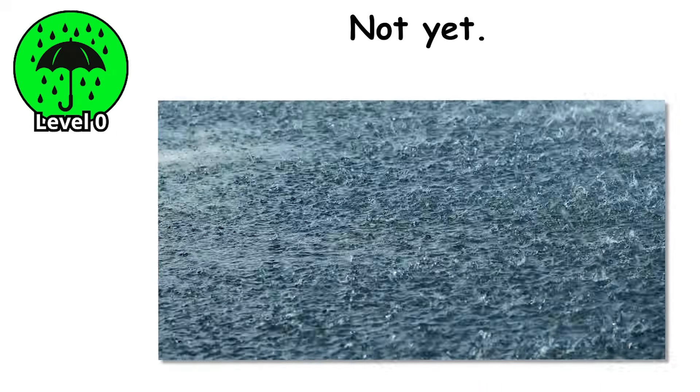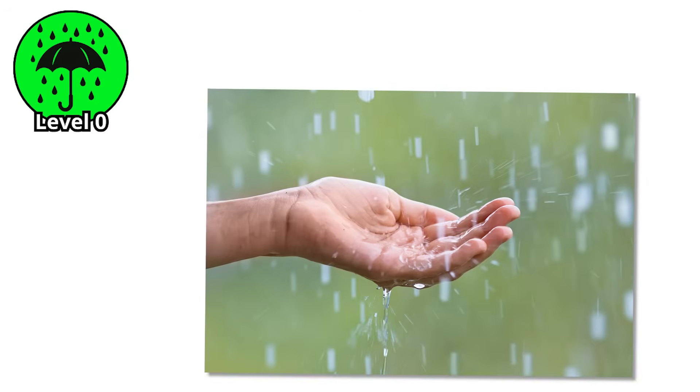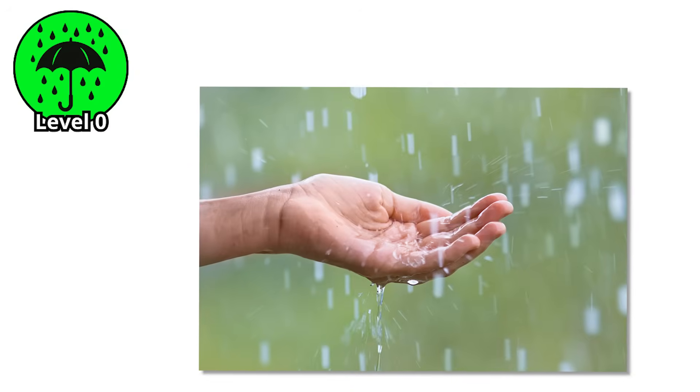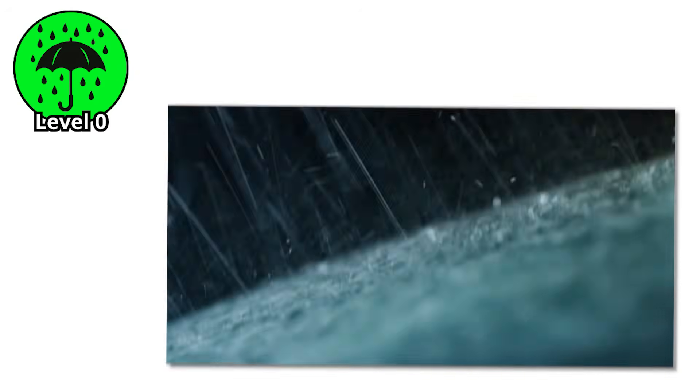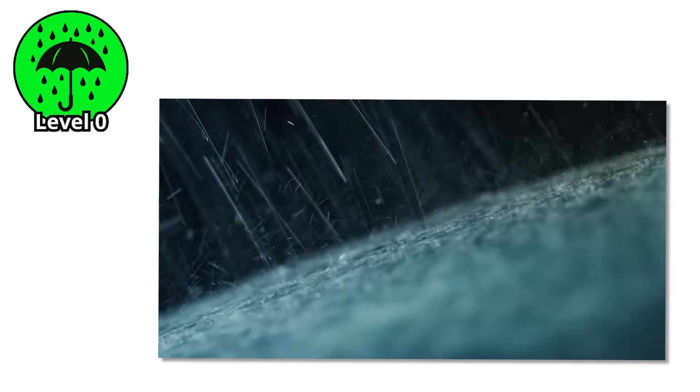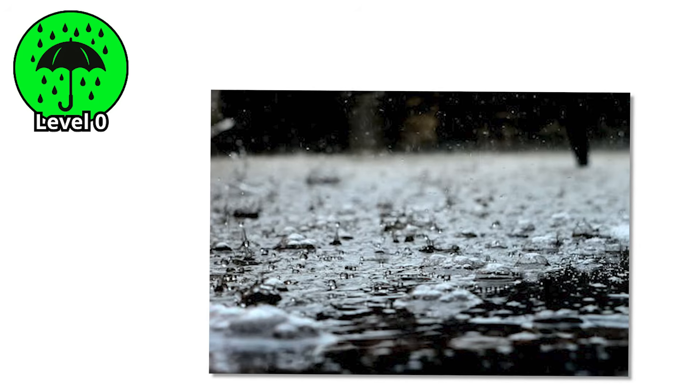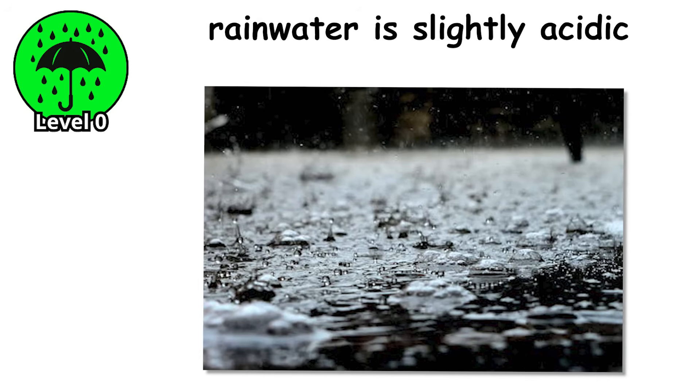Level 0. This isn't acid rain, not yet. Most people assume rain is neutral, pure — the stuff of life falling from the sky. But even in its cleanest form, rainwater is slightly acidic. Not from pollution, not from smoke or fire, but from something far simpler. Air. When carbon dioxide mixes with atmospheric moisture, it forms weak carbonic acid.